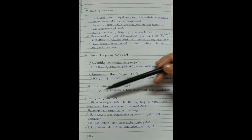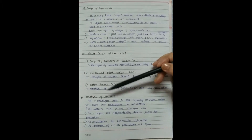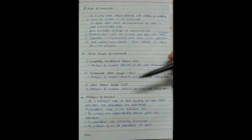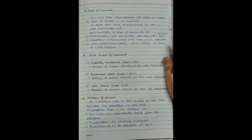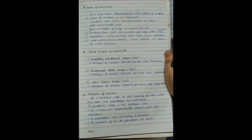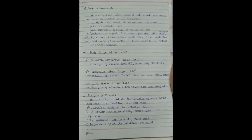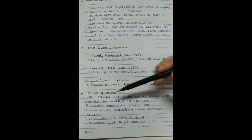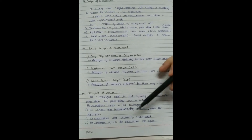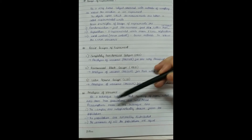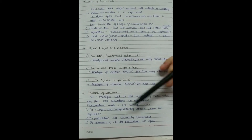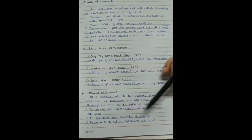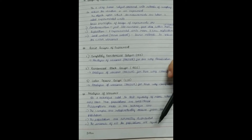First let us know what analysis of variance is. It is a technique used to test equality of means when more than two populations are considered. In previous videos we tested using the student's t-test and F-test involving at most two populations, but for more than two populations we use analysis of variance. The assumptions are: samples are independently drawn from the population, the populations are normally distributed, and the variances of all populations are equal.